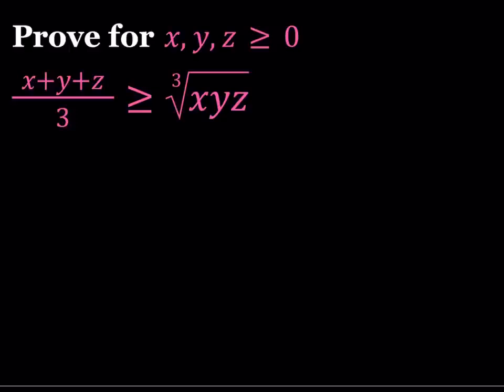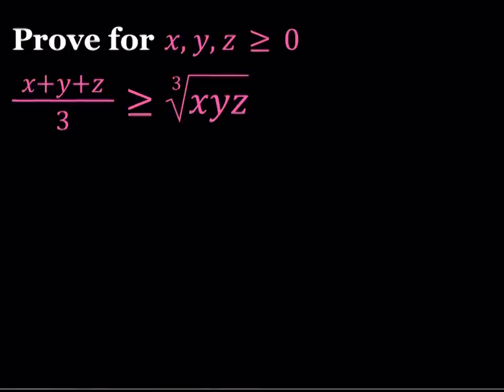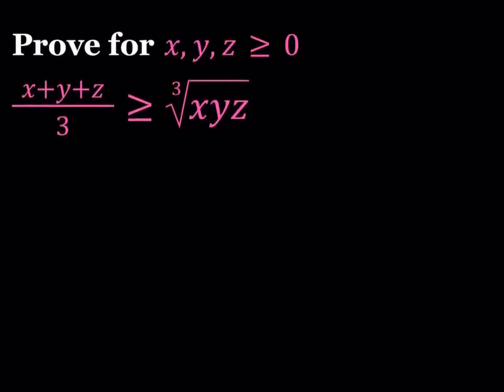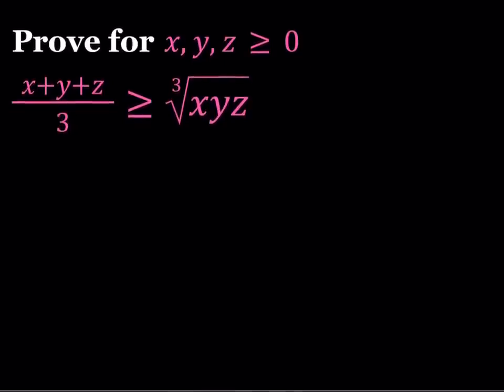Hello everyone. In this video we're going to be proving an inequality known as the AM-GM inequality for three numbers. XYZ are all greater than or equal to zero, and we're going to prove that the arithmetic mean — the average of X, Y, Z — is greater than or equal to their geometric mean, which is the cube root of their product.